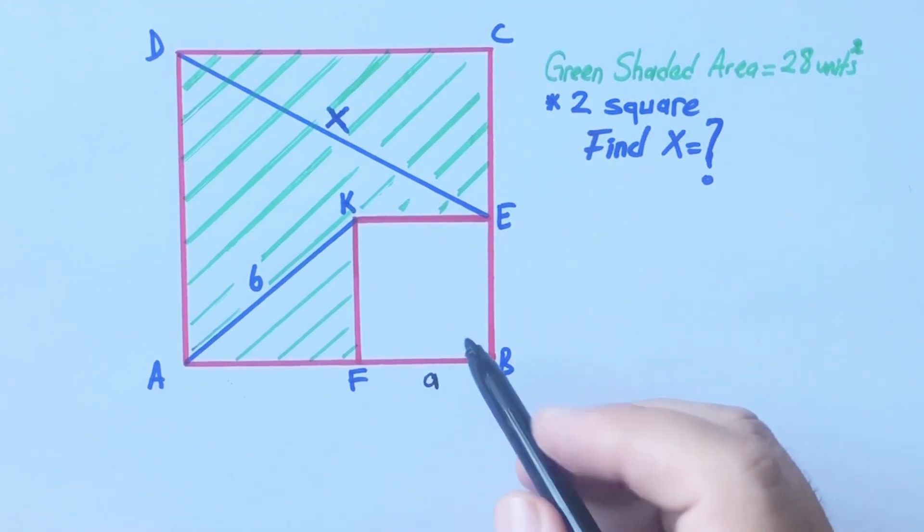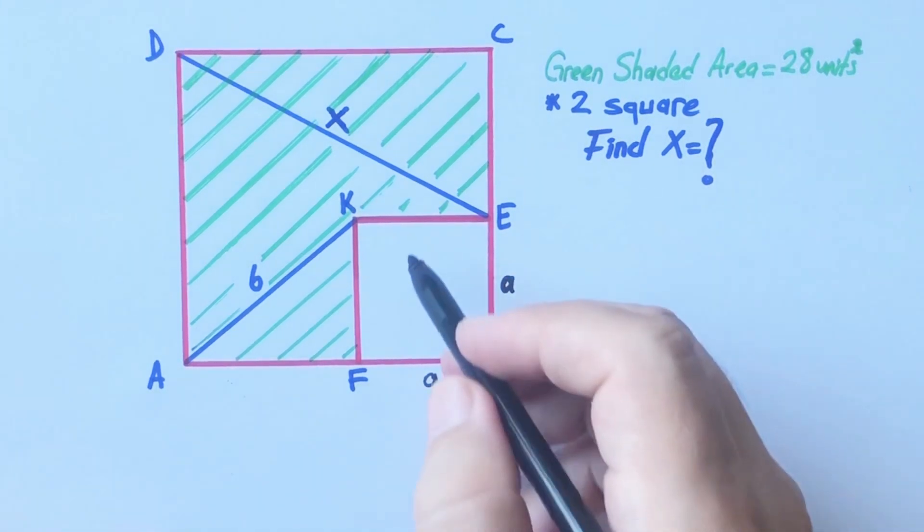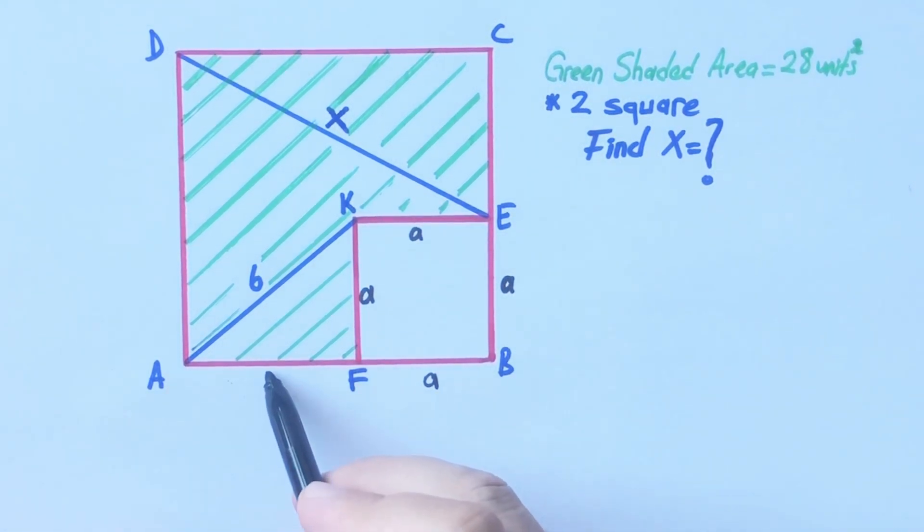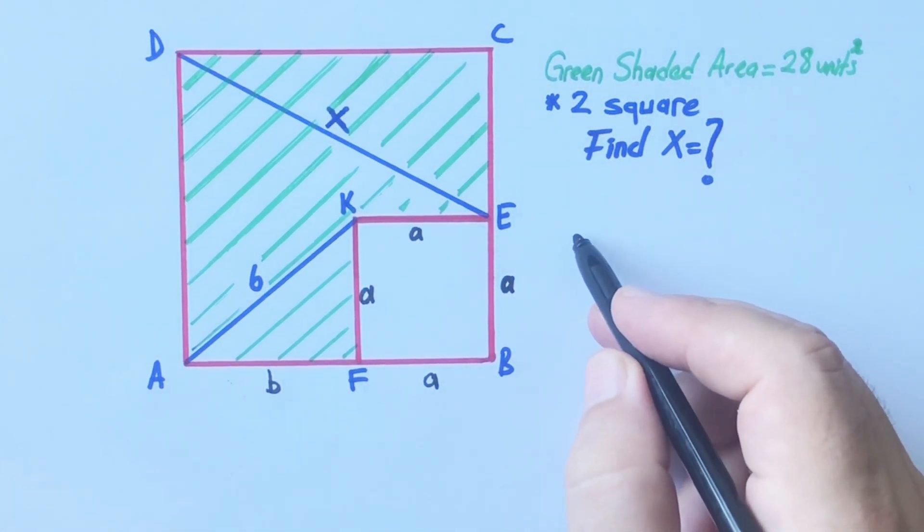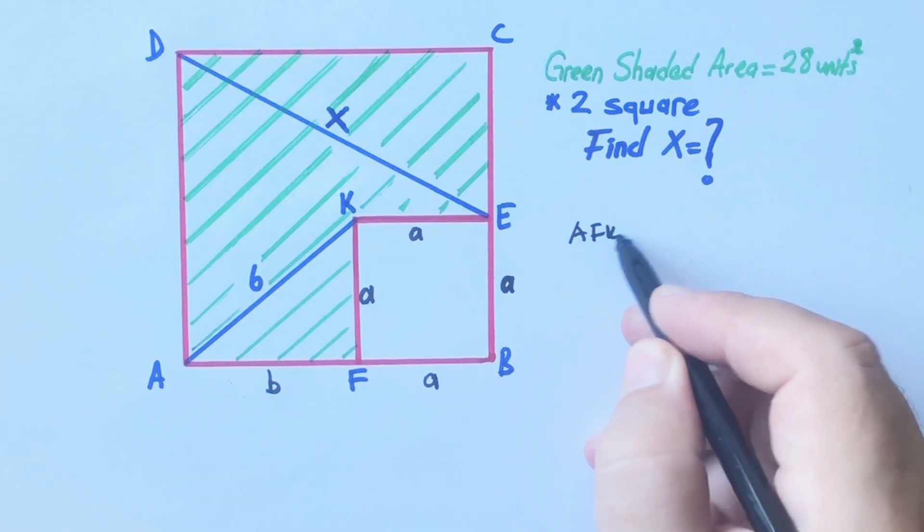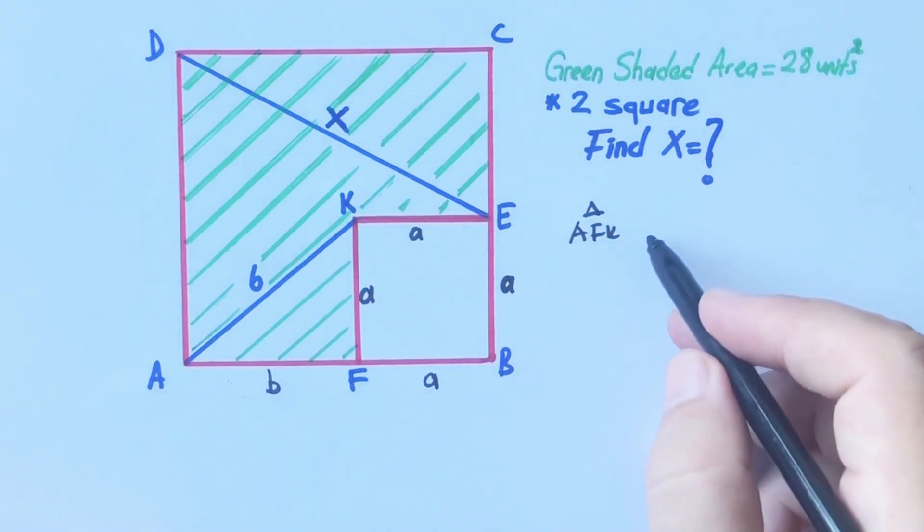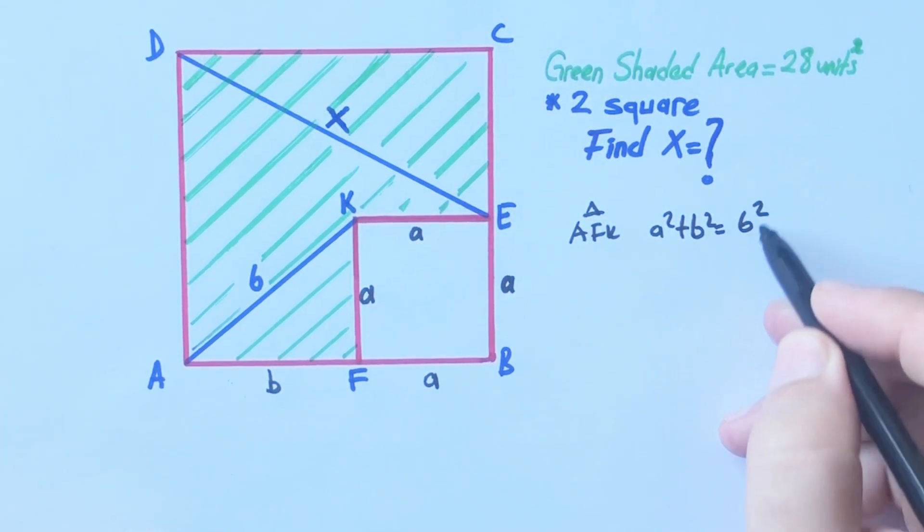First step, let's call here a, and these are also a units because it's a square. I'm going to call here b units for this triangle. If we apply Pythagorean theorem, a squared plus b squared equals 6 squared.